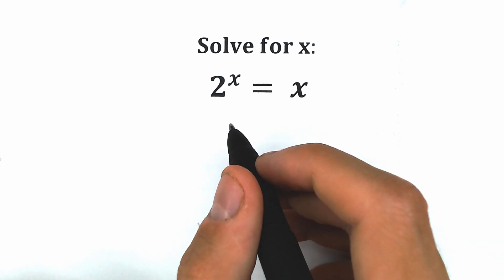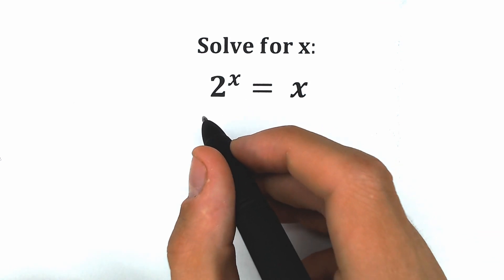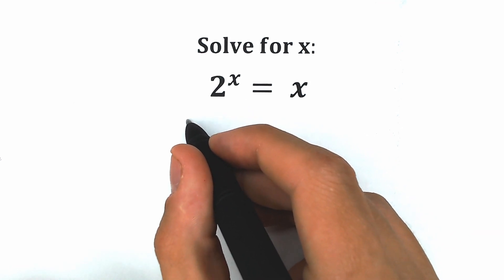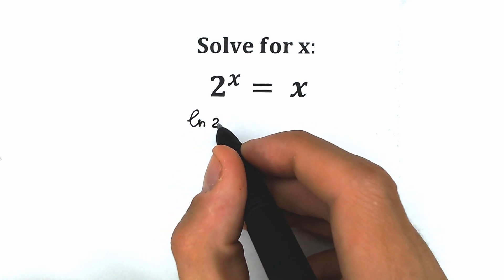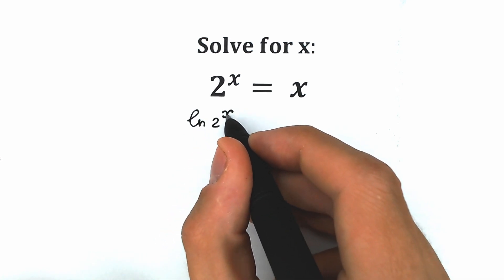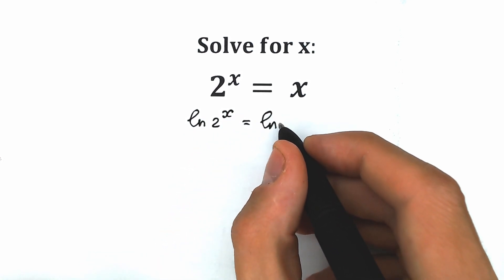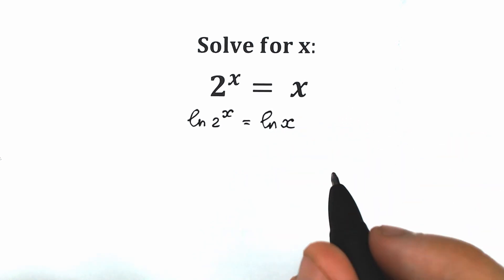First of all, let's apply natural log on both sides. So on the left side we apply natural log of 2 to the power x, and we do the same thing with the right side — natural log of x.